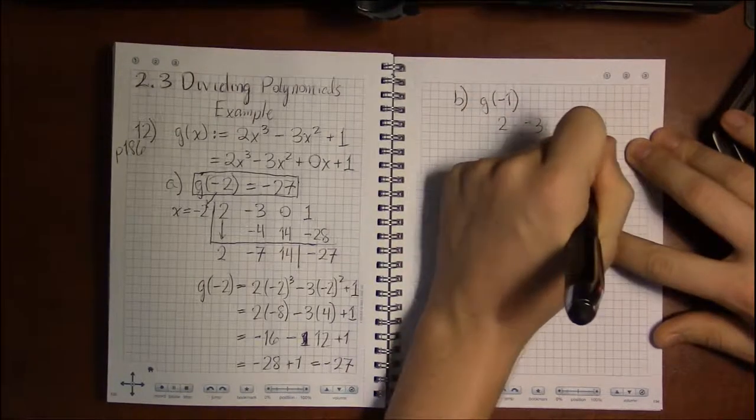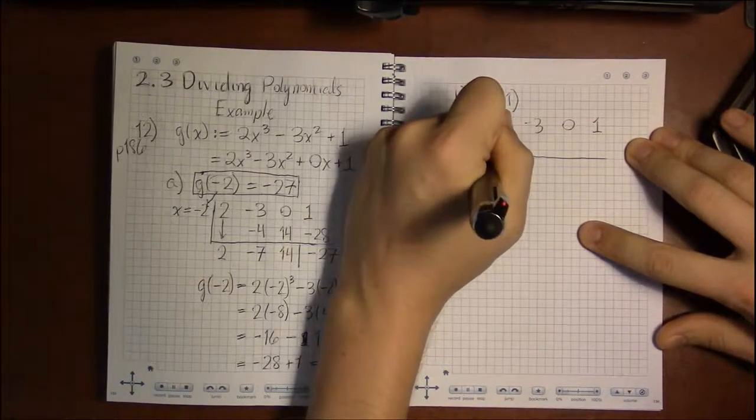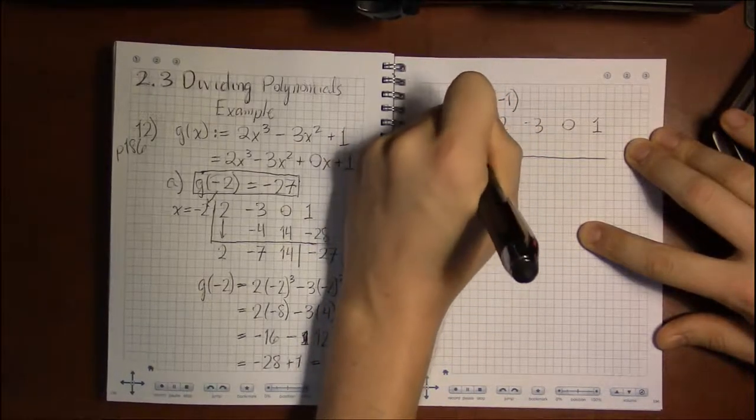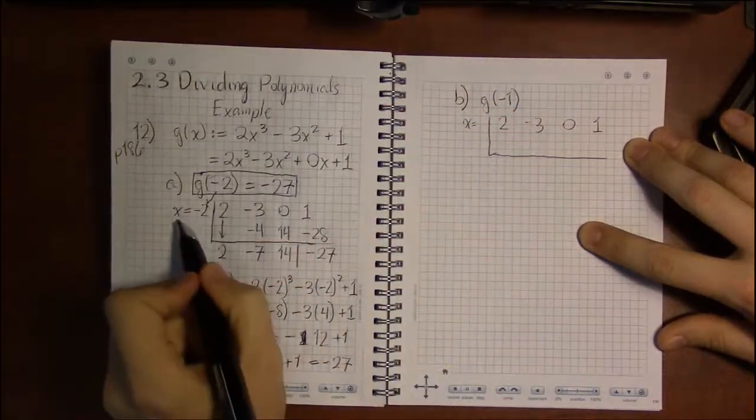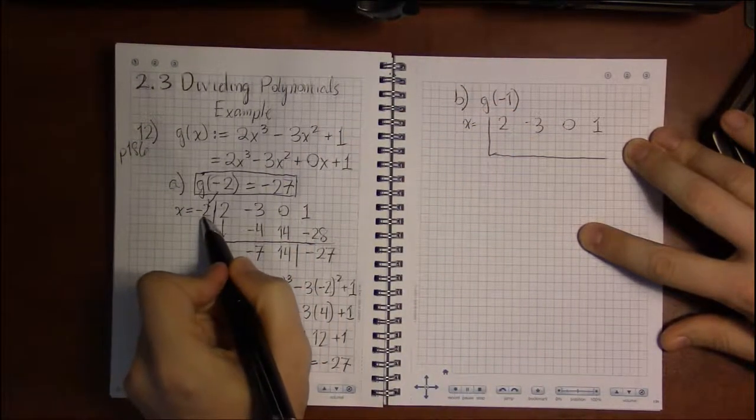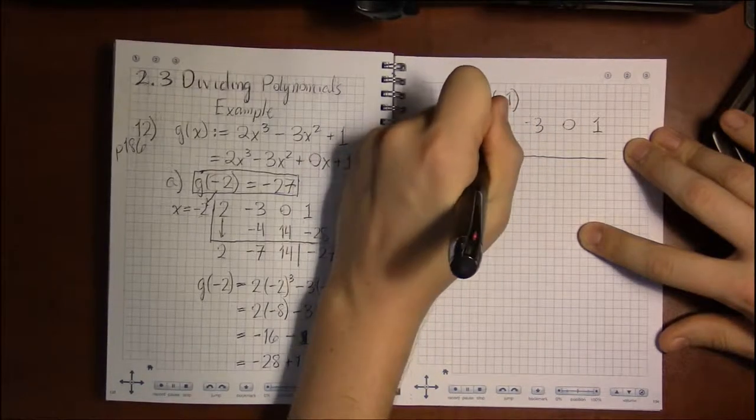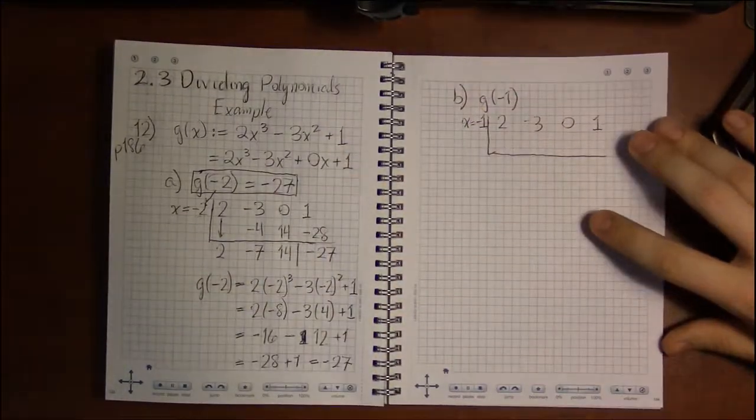What changes is we're evaluating at a new x value. It's not x equals minus 2 we're evaluating at. It's x equals minus 1 that we're evaluating at.